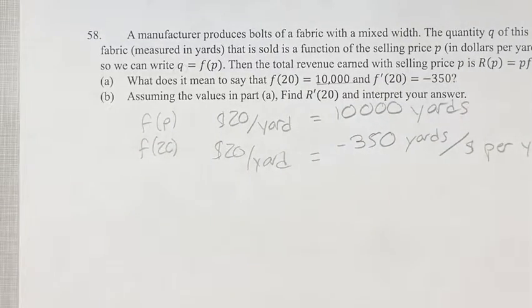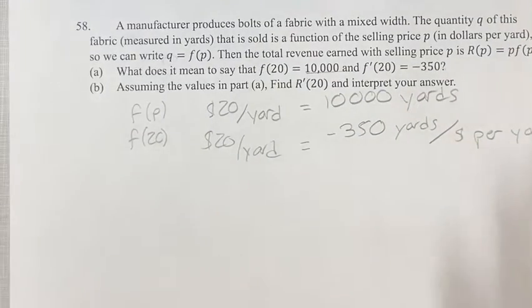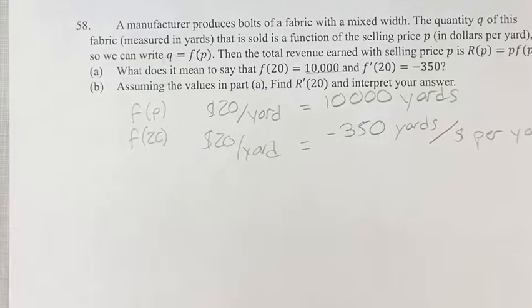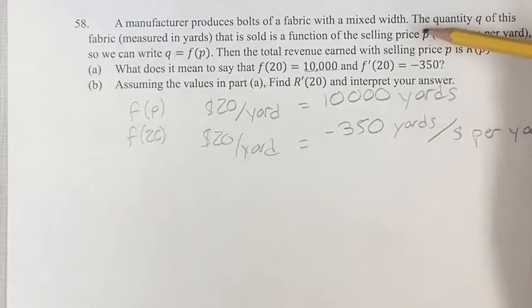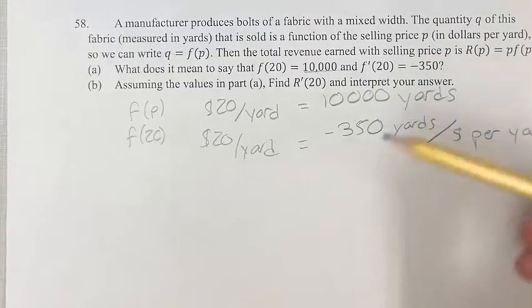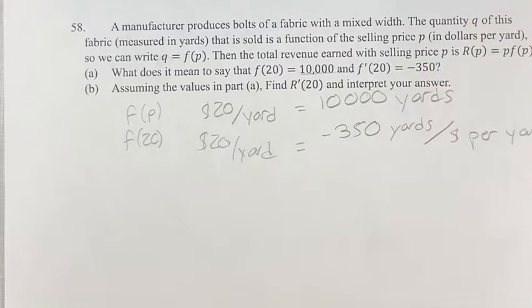Okay, if that doesn't make the most sense for this unit, we can think of it as: if you're changing the price by $1 per yard, the quantity is going to go down by 350 yards.